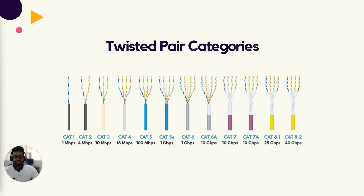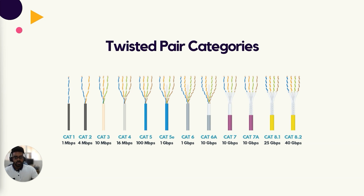Similar to coaxial cables, there are different types of twisted pair cabling called categories. A cable's category defines its transmission specifications and intended use. If you were to simply look at a twisted pair cable, it would be very hard to identify its category because they all look the same. However, almost all twisted pair cabling prints the category on the outer sheath — the word 'cat,' short for category, followed by a number. Categories range from one up to eight with variations in between.